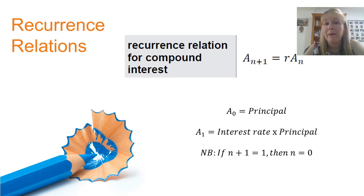The next amount, the amount at the end of the first year, A1 is our interest rate times the principal. In other words, if n plus 1 equals n, then n is going to be equal to 0 and that's why A0 is the principal. So that's the little common nuance that you need to be aware of when you're doing compound interest and relating that back to geometric sequences and recurrence relations.